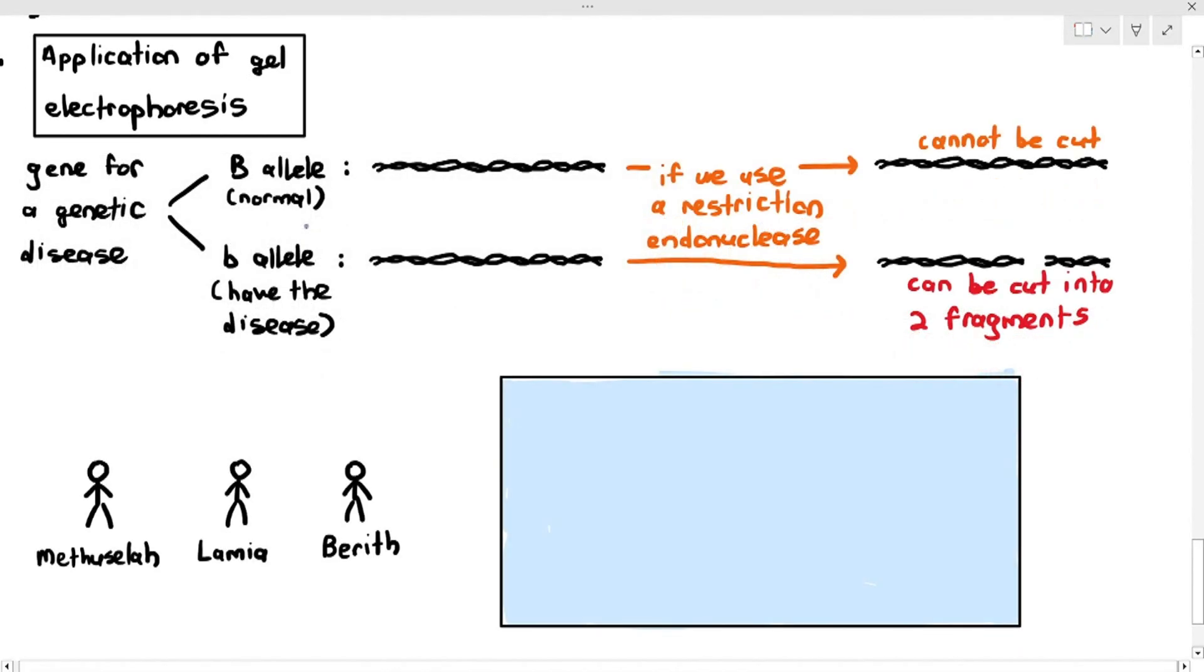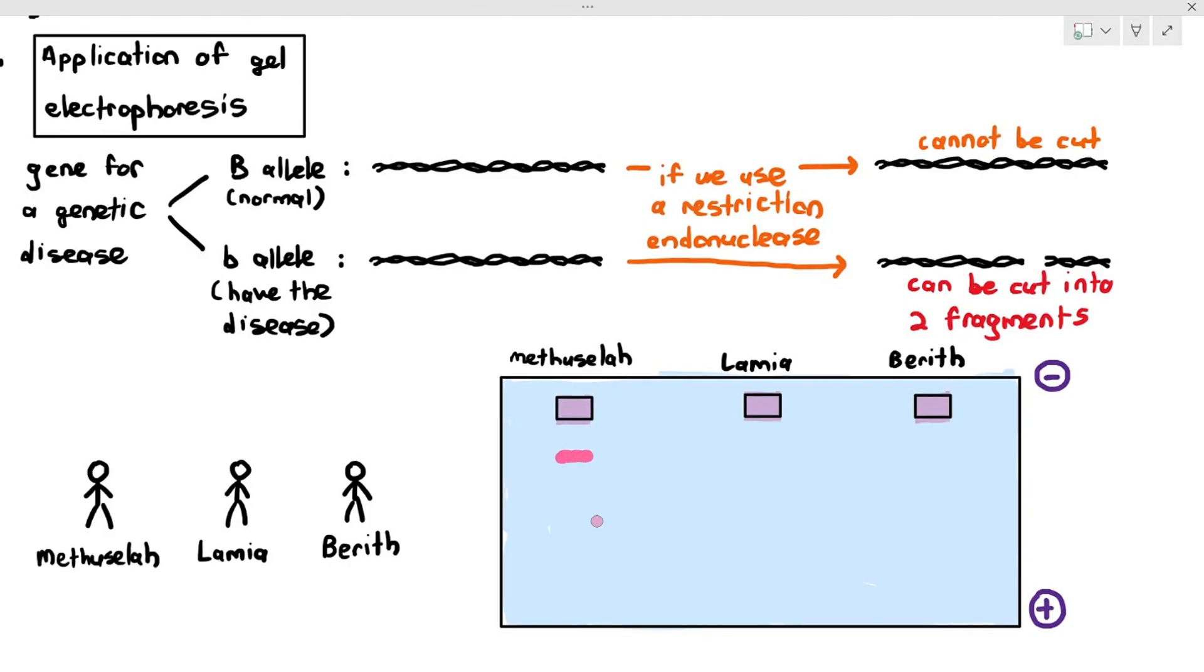Three people go to the hospital. The three people's names are Methuselah, Lamia, and Berith. These people went to the hospital to check whether they have the disease. The scientists checked the DNA and put the DNA into the gel and separated it according to DNA fragments. Interestingly for Methuselah, they only had one band forming. For Lamia, they had two bands forming at the bottom. And for Berith, they had three DNA fragments forming.